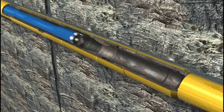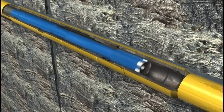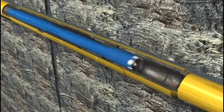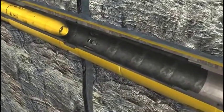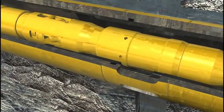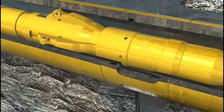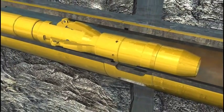The reclosable frack sleeves allow the operator to isolate a particular zone for water intrusion or to isolate for re-fracking at a later date. Once the ball seat is drilled out, a shifting tool can be run in on either wire line or coil tubing, and the sleeve can be shifted closed and reopened if needed.